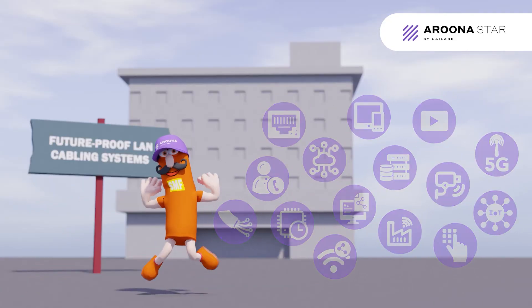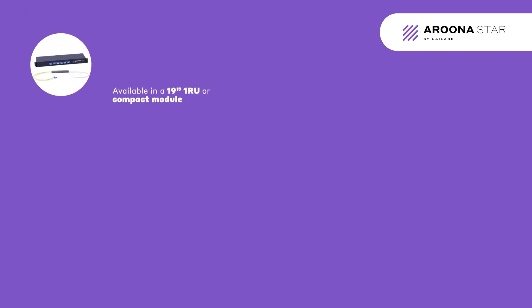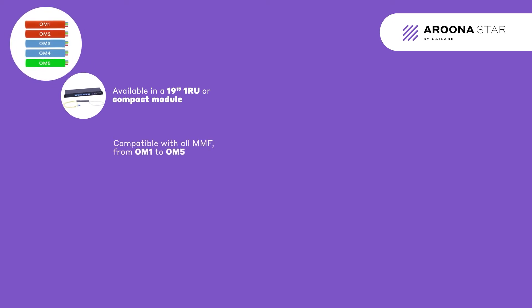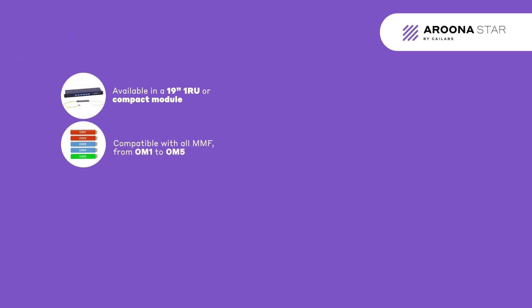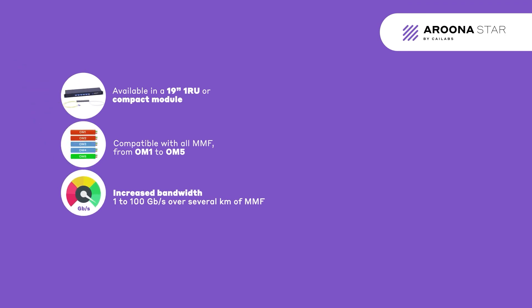The ARUNA solution is available in a 19-inch 1RU packaging, or in a more compact format. It's compatible with all generations of multimode fiber. By increasing the bandwidth of the multimode fiber, data rates of 1 to 100 gigabits per second can be transmitted over several kilometers.